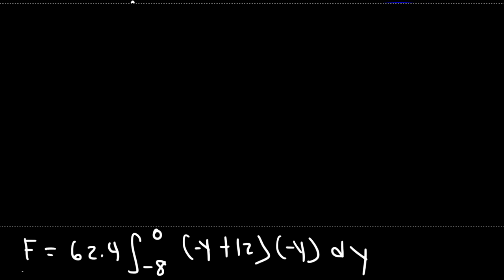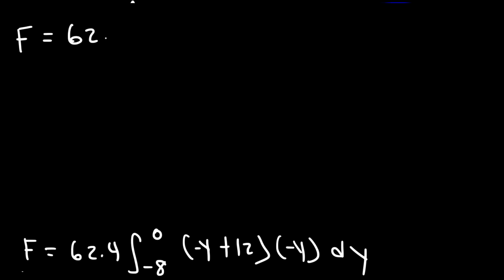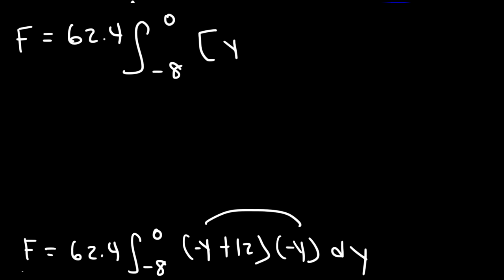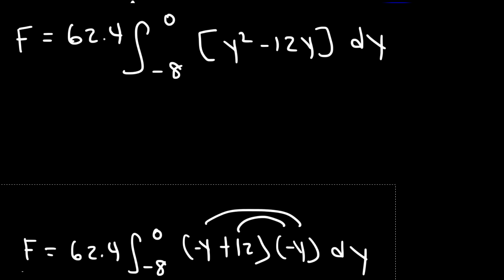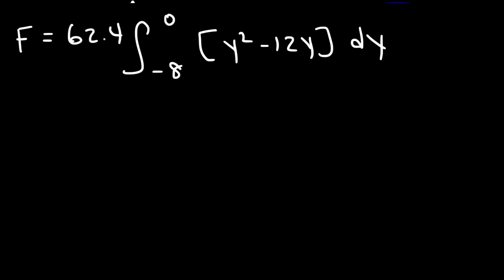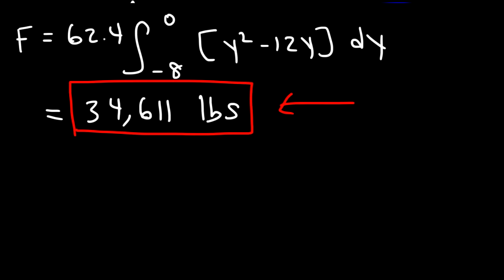Distributing negative y: negative y times negative y is positive y², and 12 times negative y is negative 12y. Typing the expression into a calculator gives 34,611 pounds. Since we used 62.4 pounds per cubic foot, the answer is in pounds — that's the hydrostatic force on the vertical trapezoid.